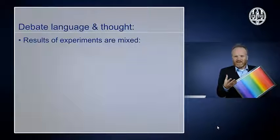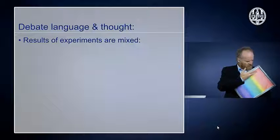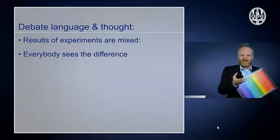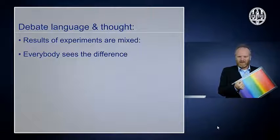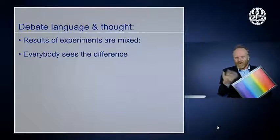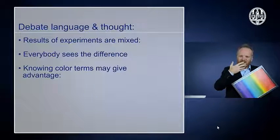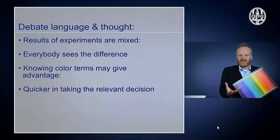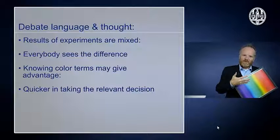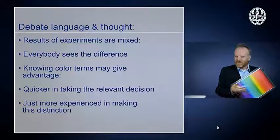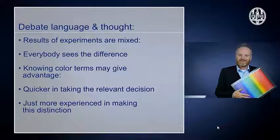On the one hand, people who have no different words for orange and red still do see the difference between orange and red tiles. On the other hand, people who do have words for orange and red might have an advantage — in some experiments they might be slightly quicker in taking the relevant decision. That in turn could also be just a result of them being more experienced in making this distinction because that's what they do in their language all the time. This debate has not been completely resolved yet.